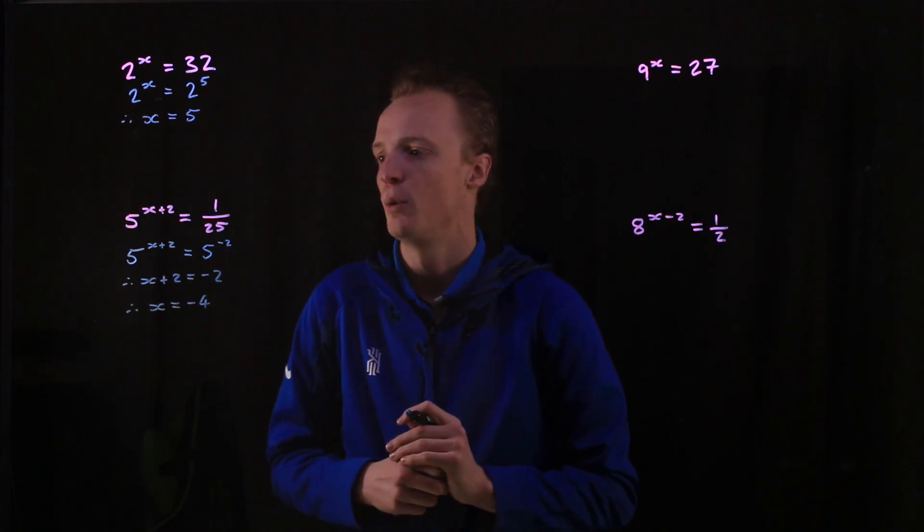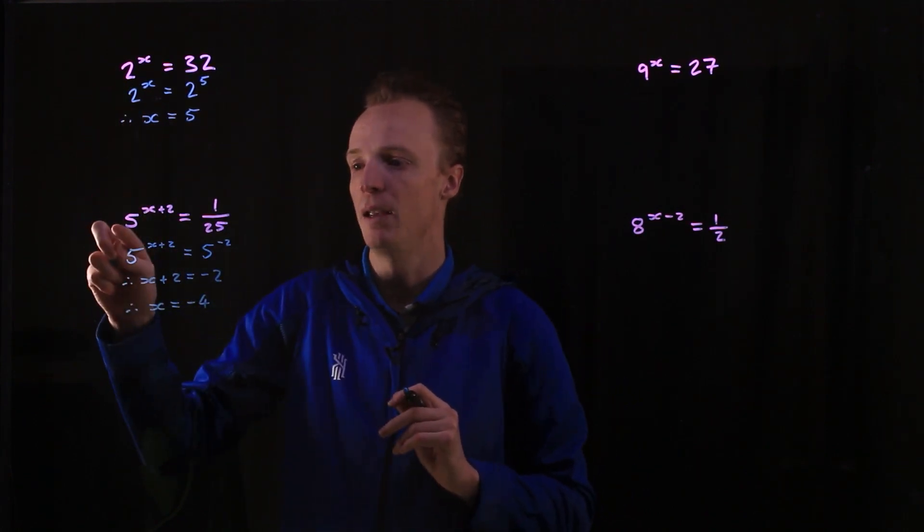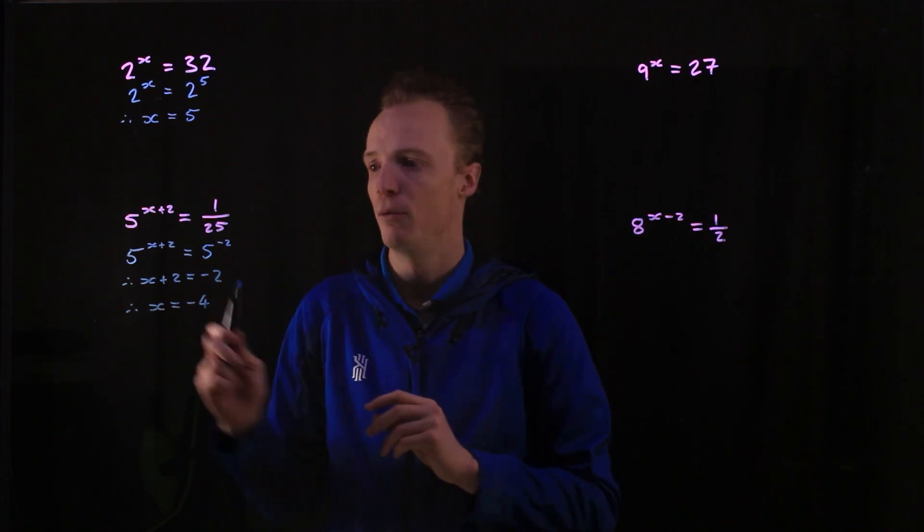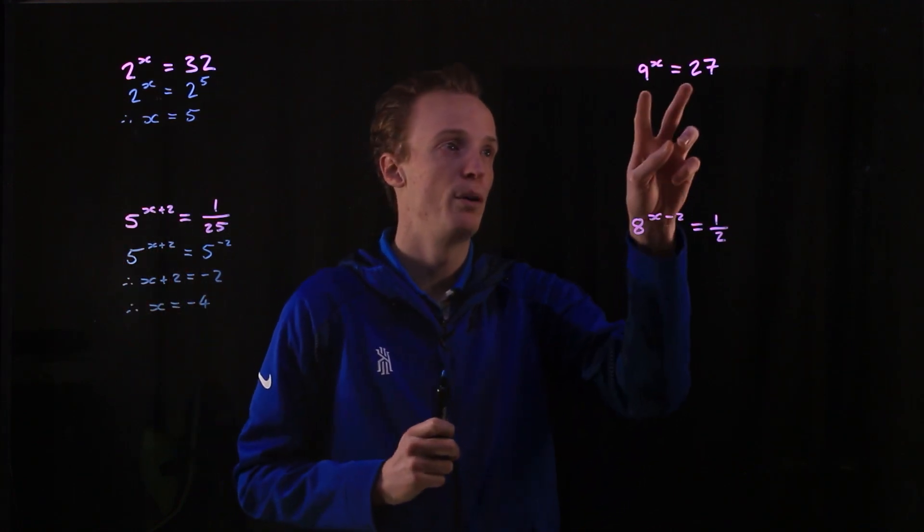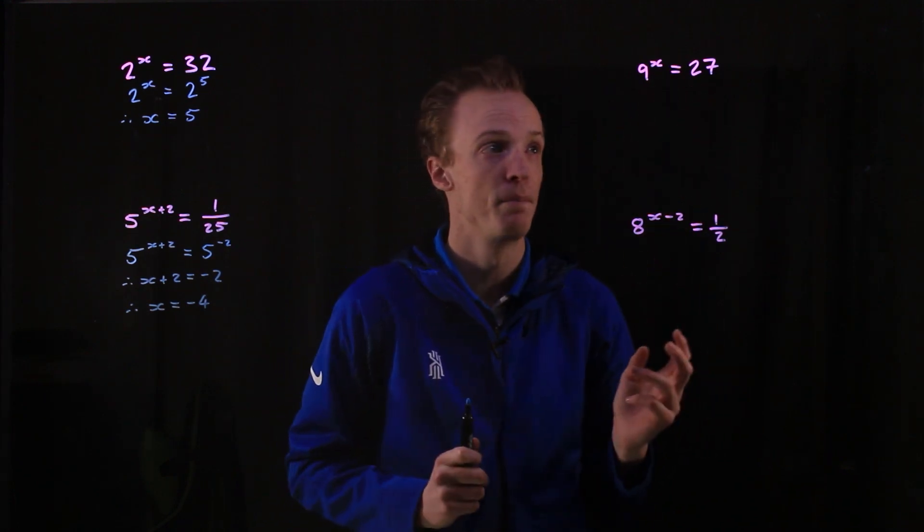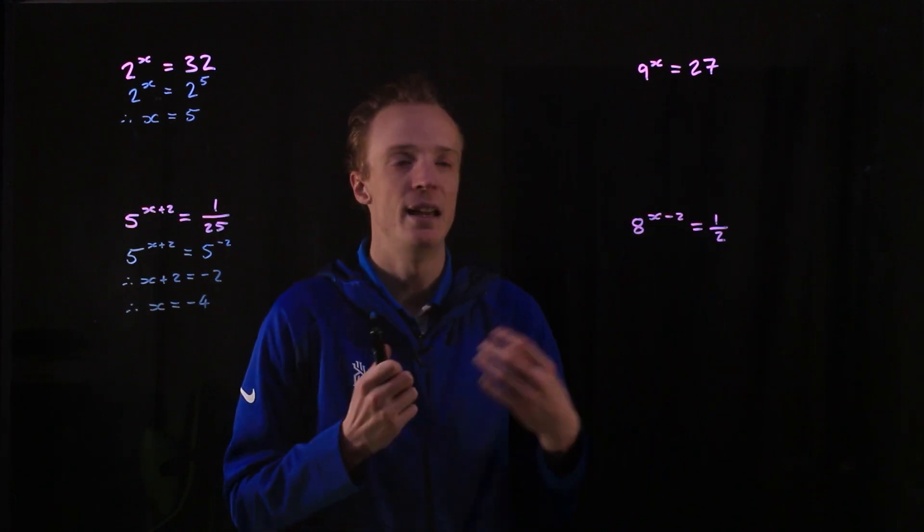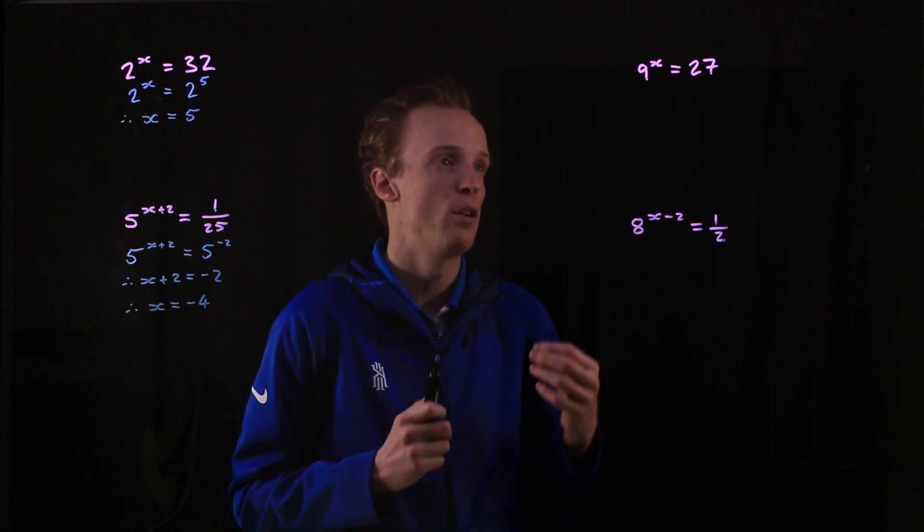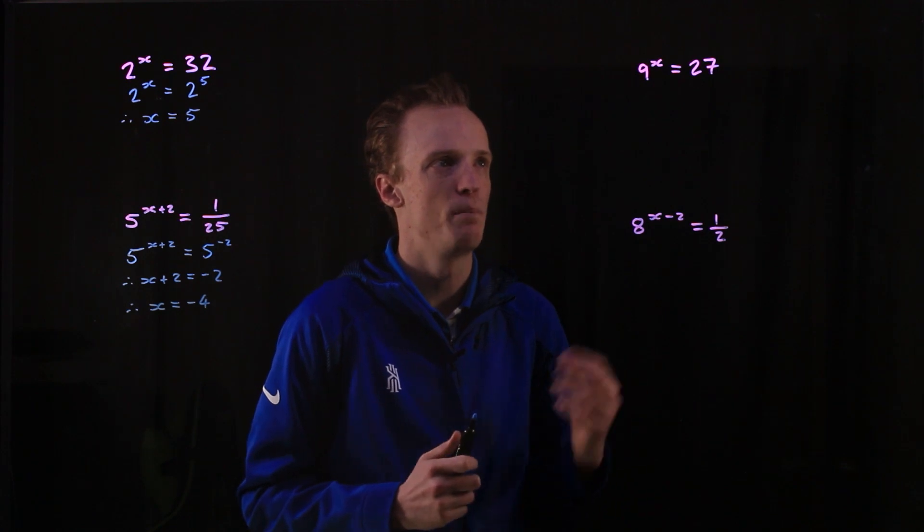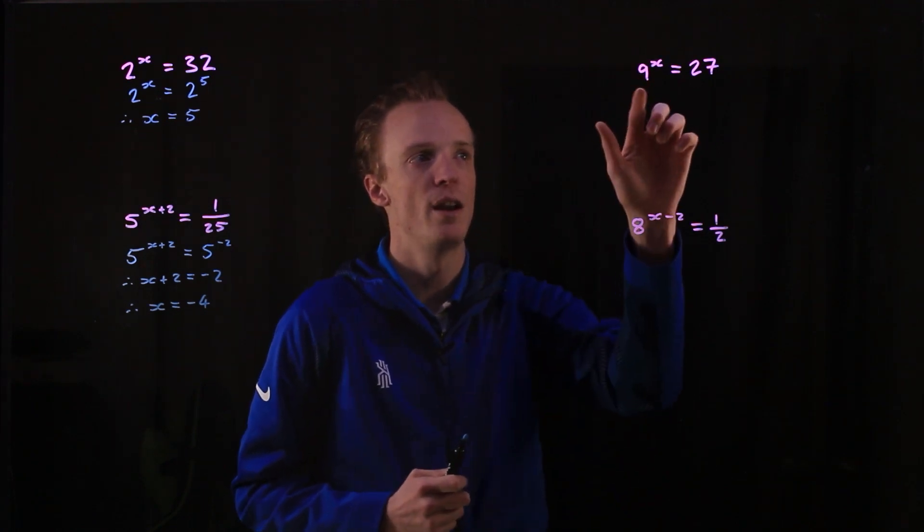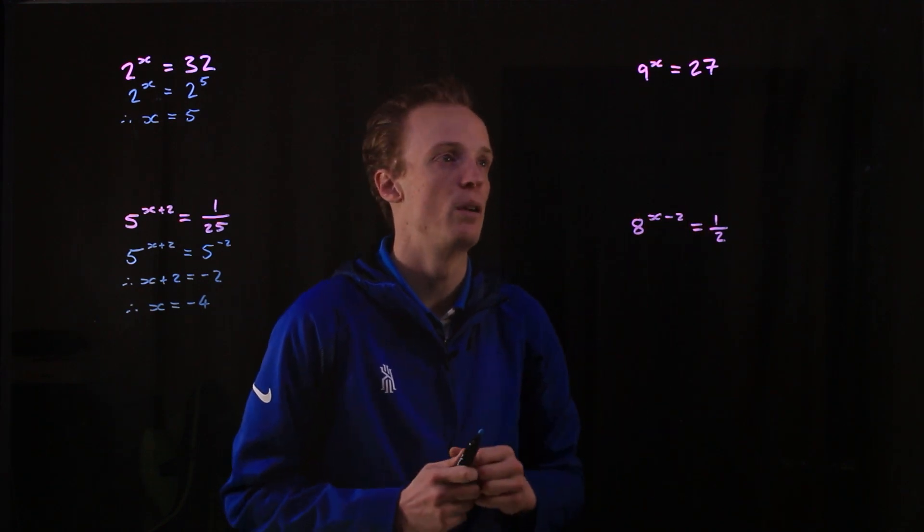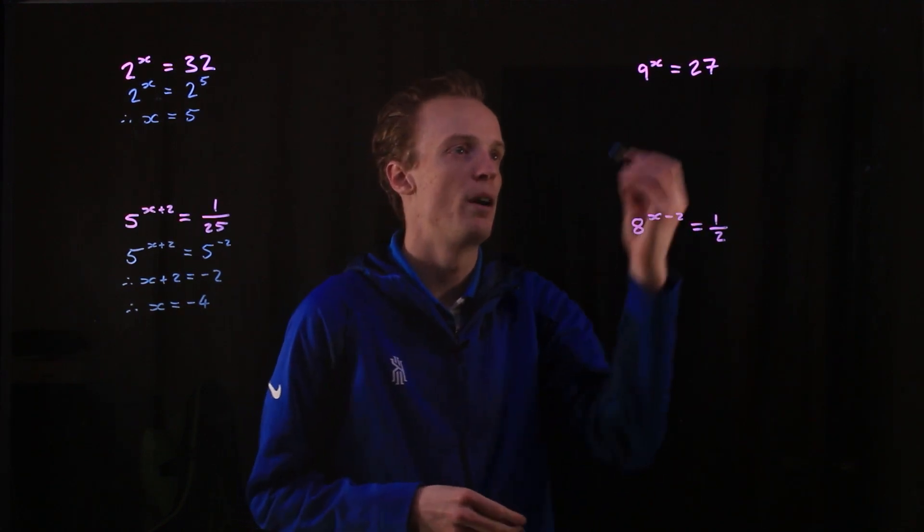Now you don't always get situations where the base has been given to us already. Sometimes we actually have to follow that process of rewriting it with the same base on both sides of the equation such as here. So I can't really write 27 at least nicely with a base of 9 easily. But looking at both sides of the equation, I know that 9 has a base of 3 quite nicely, and 27 has a base of 3 quite nicely as well.